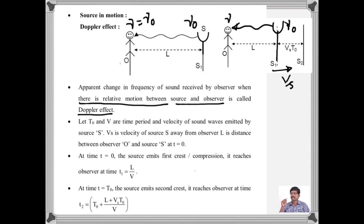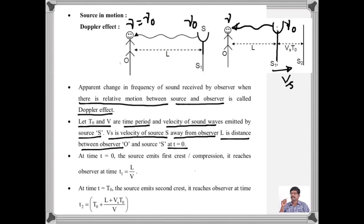Let us derive the expression for this apparent frequency. Let T₀ and V be the time period and velocity of sound waves emitted by source S. Vs is the velocity of the source away from the observer, and L is the distance between the observer and source at T = 0. At T = 0, the source emits the first wave — that is, first crest or compression — and it reaches the observer after time T₁ = L/V, where L is the distance between source and observer at T = 0.